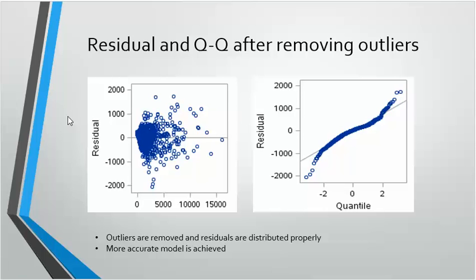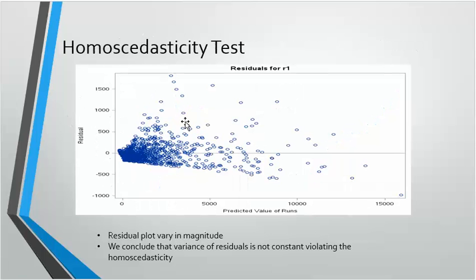Next we check the homoscedasticity test. We get the residuals as shown — the residuals plot varies in magnitude. Hence we conclude that the variance of residuals is not constant, violating the homoscedasticity assumption.